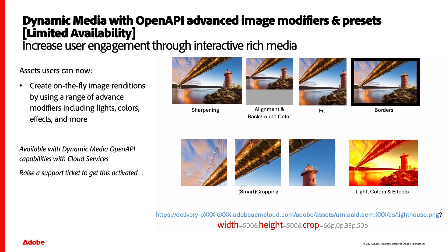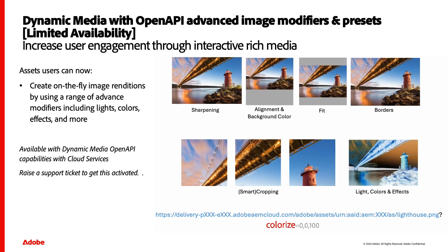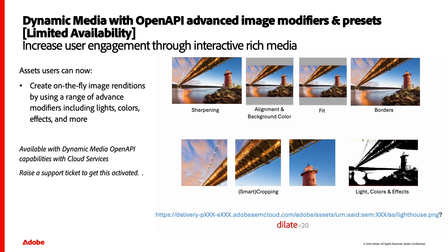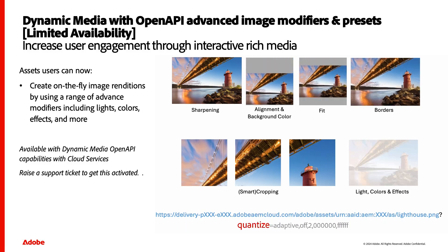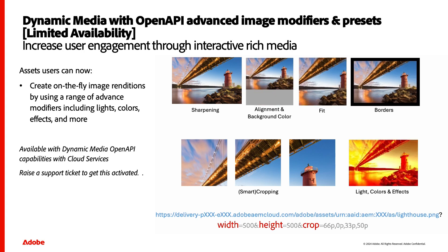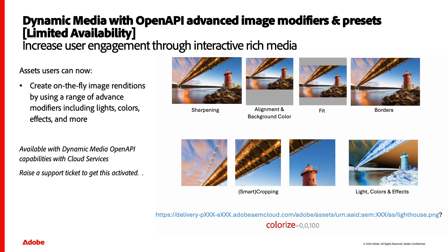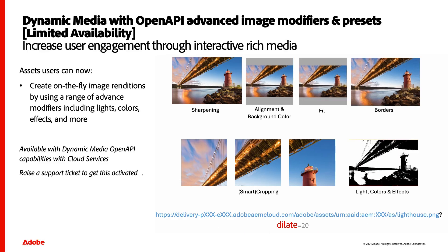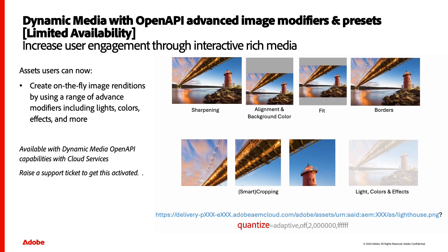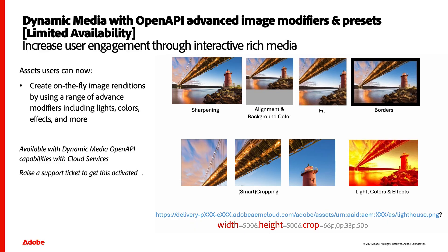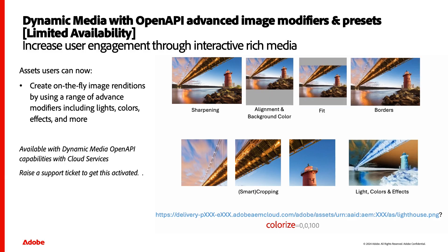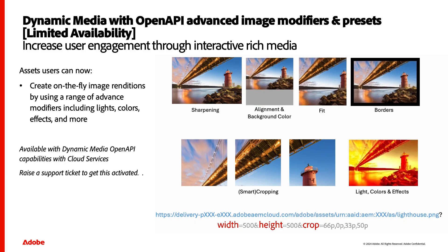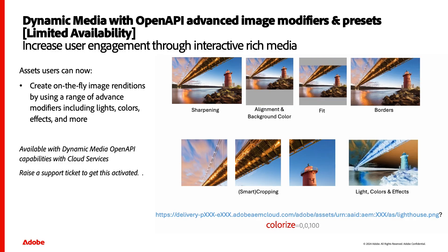Also for Dynamic Media users is new OpenAPI advanced image modifiers and presets, allowing you to add simple URL parameters. Here you can see some examples such as unsharp mask and resampling modes, alignment and fit. Extend is widely used by customers for borders and shading, and there's an example of scaling and cropping. The last example shows various modifiers for lighting, colors, and effects.